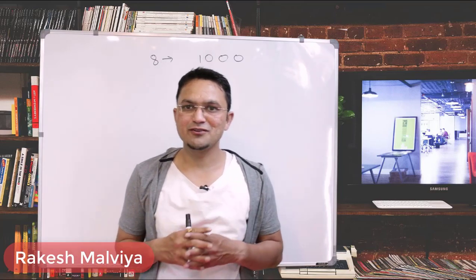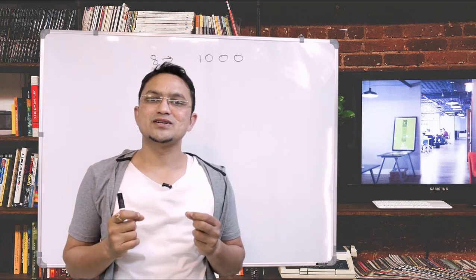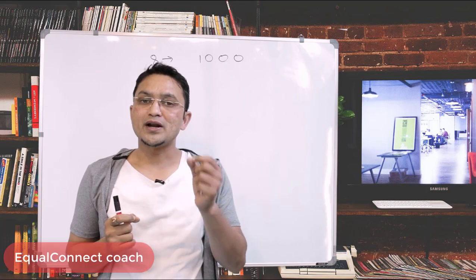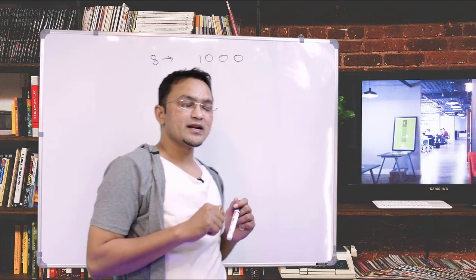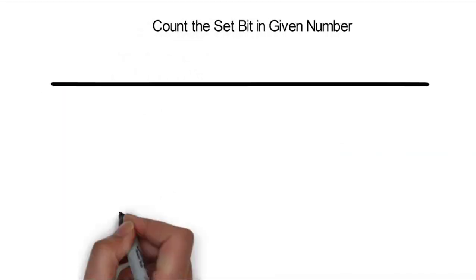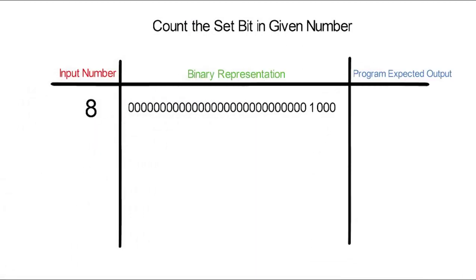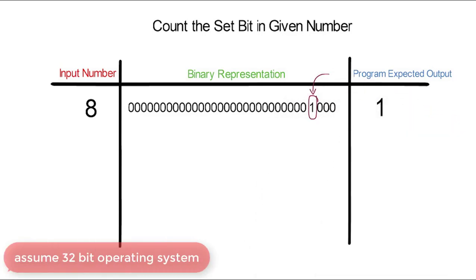Hi guys, this is Rakesh here and welcome to the session of Equal Correct Coach. In this session we are going to discuss a problem statement where I'm going to find out how many bits are set for a given number. For example, if I give the number 1, how many bits are set? You can see only one bit is set, so the output should be 1.